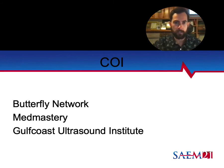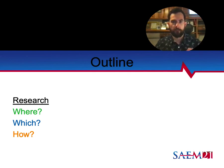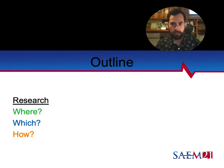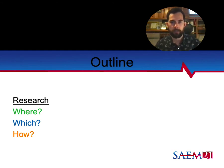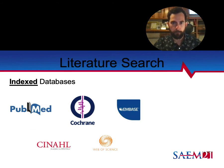This talk will be organized into finding research, the types of studies, and then some basic stats. The 'where' is where are these articles — how do you find this research? The 'which' is what types of studies are there? And the 'how' is how do we do and interpret the studies? That's when we get into the stats. Let's do it.